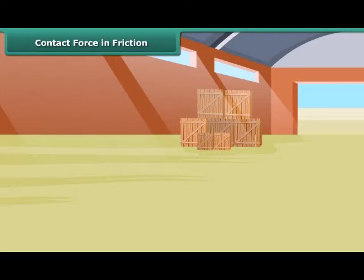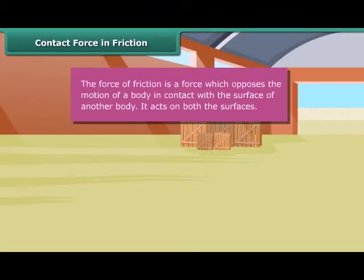This example proves that friction depends on the amount of contact force pushing the two surfaces together. The force of friction is a force which opposes the motion of a body in contact with the surface of another body. It acts on both surfaces.